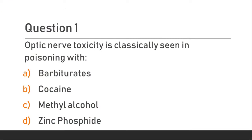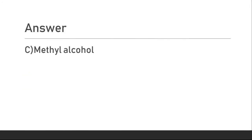Question 1. Optic nerve toxicity is classically seen in poisoning with: Option A, Barbiturates; Option B, Cocaine; Option C, Methyl alcohol; Option D, Zinc Phosphide. The answer is Option C, Methyl alcohol.